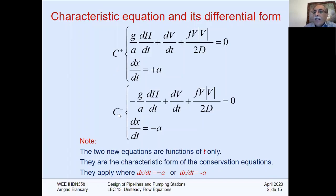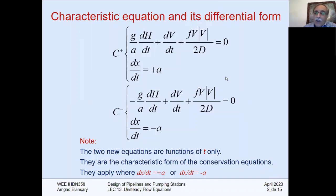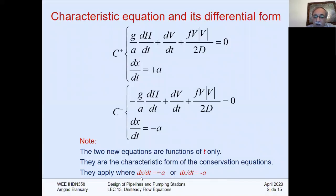In any water hammer book, C plus represents the positive characteristic equation on the condition that dx by dt equals plus a, and C minus represents the negative characteristic equation with the condition dx by dt equals minus a. These two new equations are functions of time only — they are the characteristic form of the conservation equations, because we combined continuity and momentum together. They are valid — conditioned — when dx by dt equals plus a or minus a.